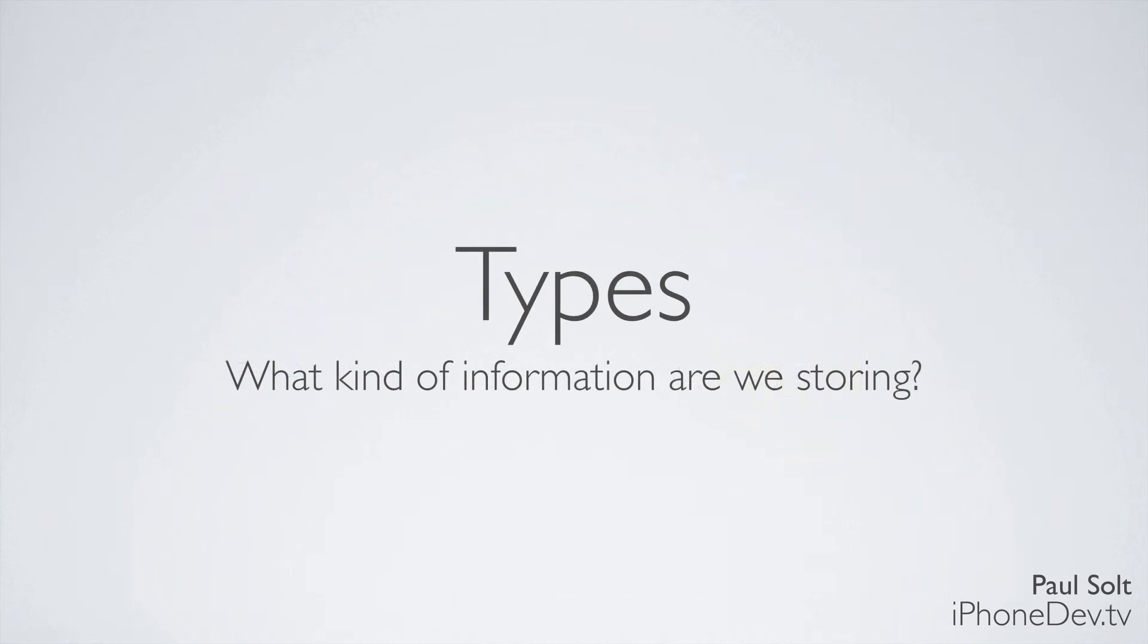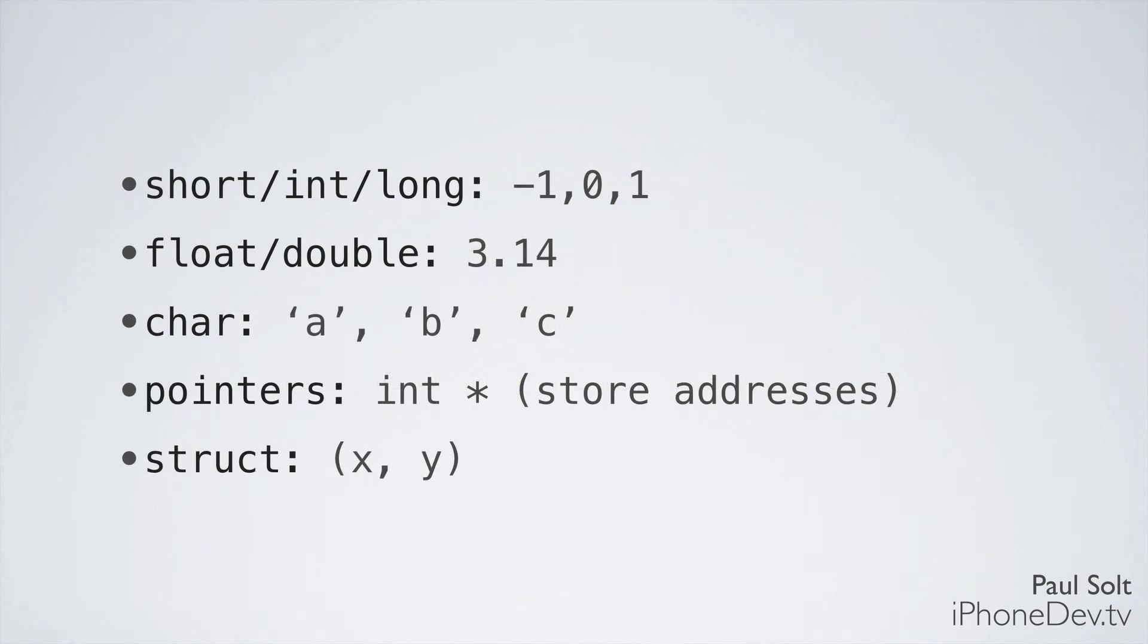The next thing we're going to talk about are types in more detail. This is what kind of information we're storing, like photos, videos, and Word documents. Types allow us to describe the building blocks that go into those more complicated pieces of information. The most common ones are short, int, and long. These are all special keywords that identify integer types: negative numbers, zero, or positive numbers. These are whole numbers with no decimal places. Next, we have float and double for real numbers, and these can have decimal places. 3.14 is a good example.